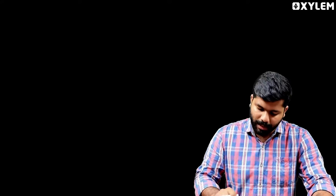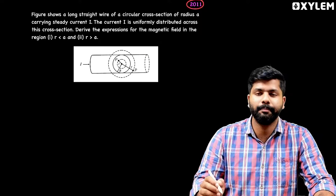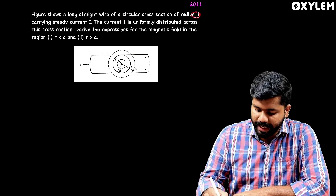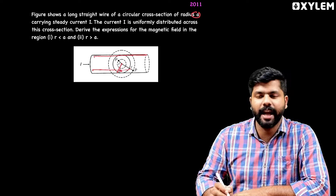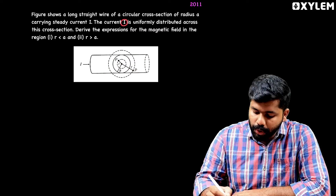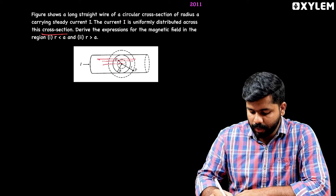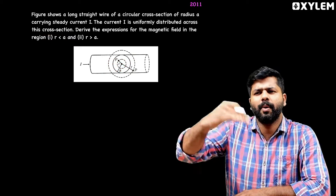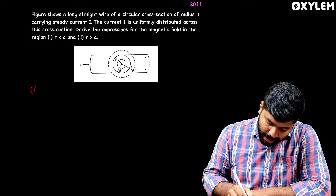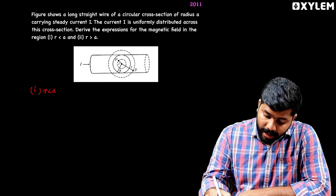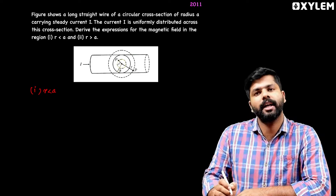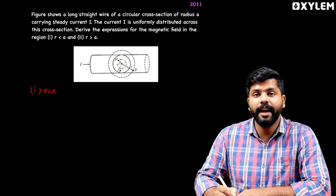Next question — from the 2011 exam. A long straight wire of circular cross-section of radius a carries a steady current I. The current I is uniformly distributed across the cross-section. Derive the expression for the magnetic field in two regions: region 1 where r < a (inside the wire), and region 2 where r > a (outside the wire).